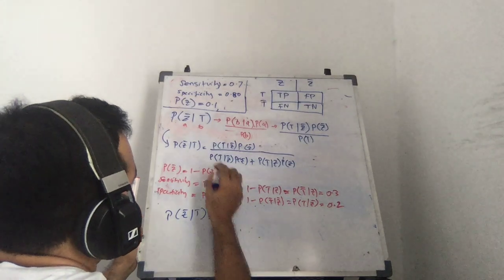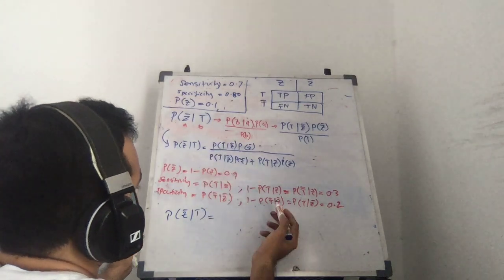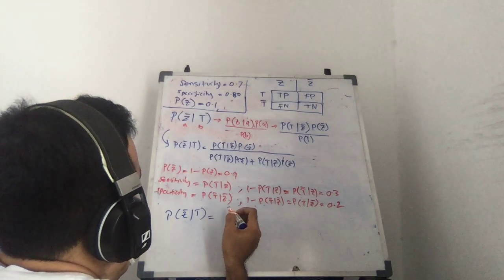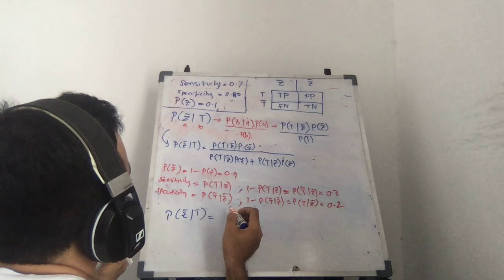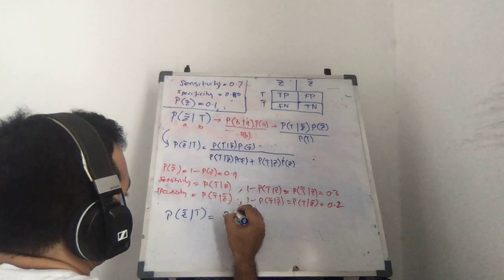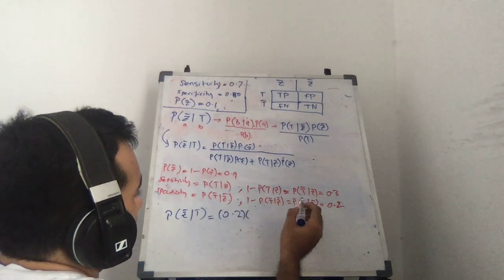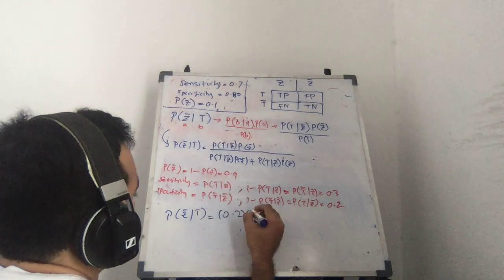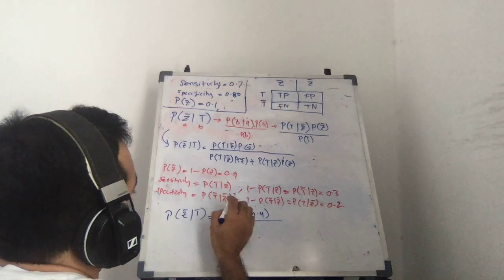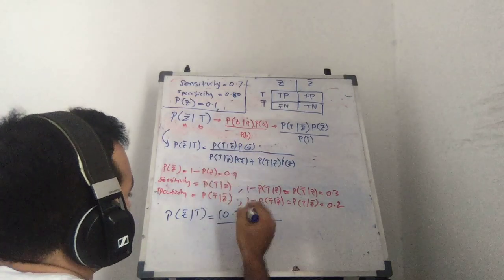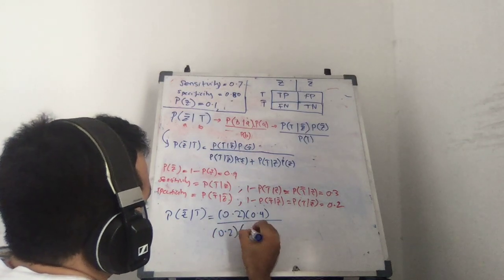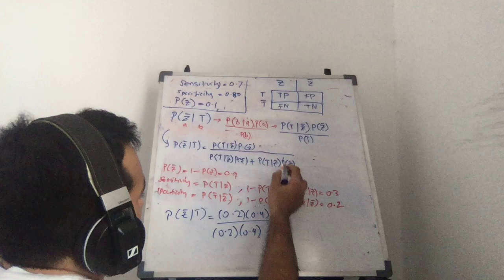so we need probability of T given not Z, so we do have this somewhere. Probability of T given not Z. Where is that? Here we go, 0.2, 0.2 times probability of not Z, which is up here, 0.9, divided by probability of, so you just repeat the same thing, it's the same thing up here,